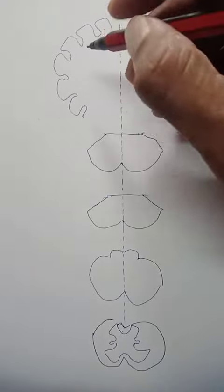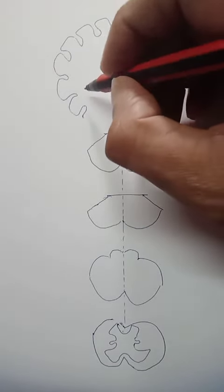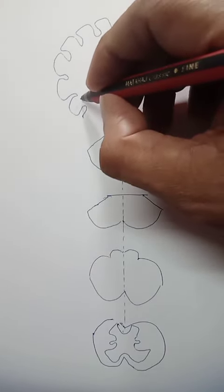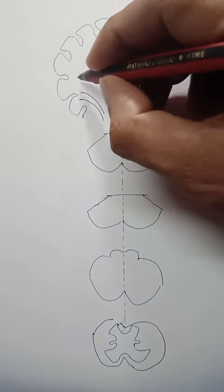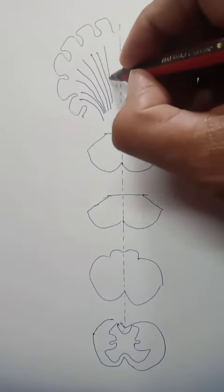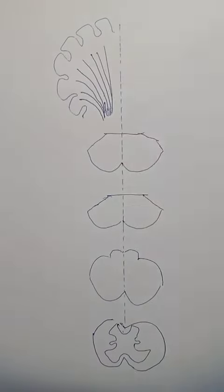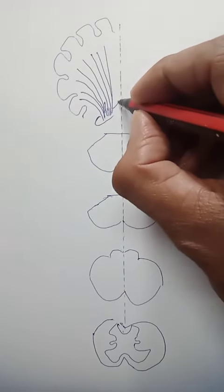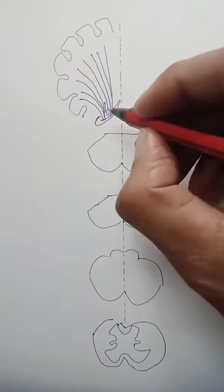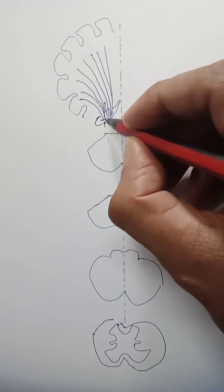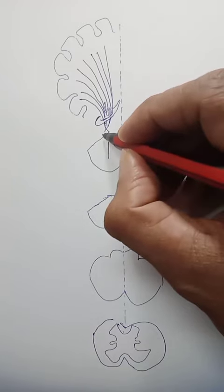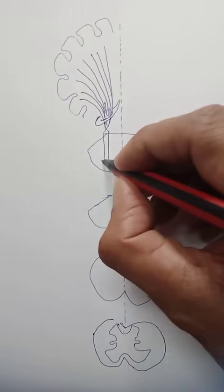Pyramidal tracts originate from the motor cortex, then the premotor area and sensory cortex. They form the corona radiata and converge, descending in the internal capsule — the anterior two-thirds of the capsule. The fibers continue to converge, twist a bit, then descend down into the midbrain.